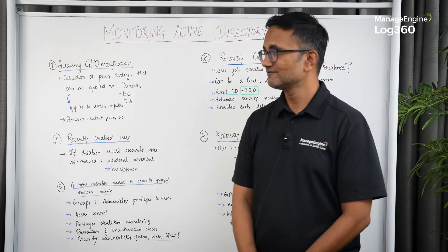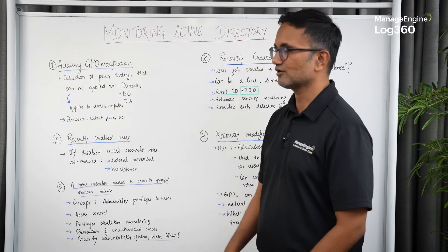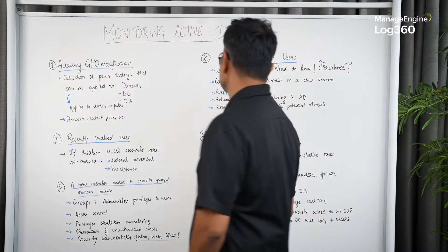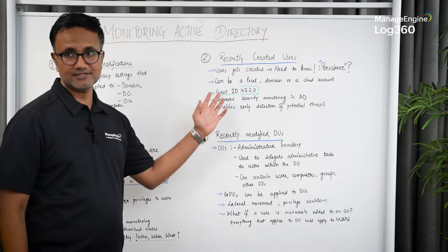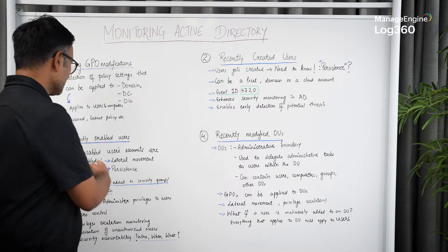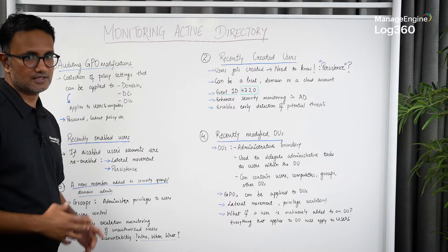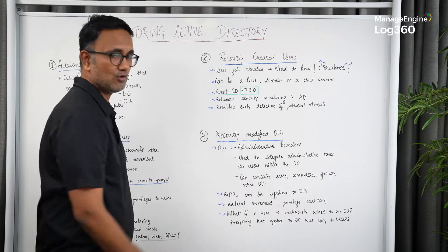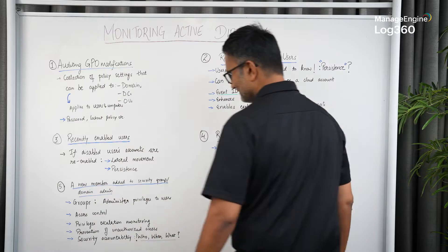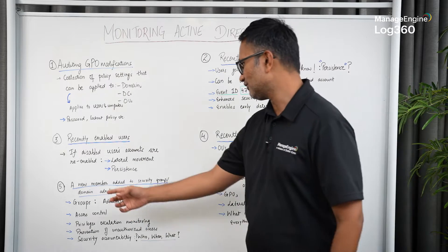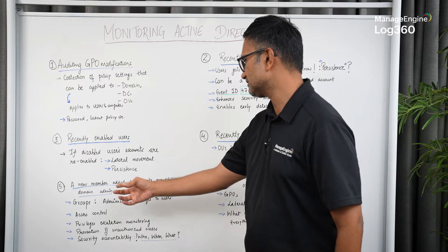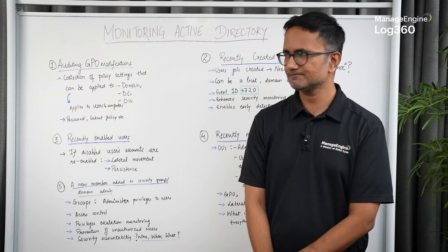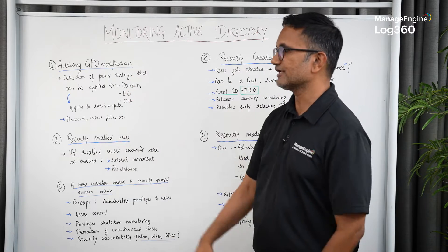First is auditing GPO modifications, or how you're going to audit your Group Policy Objects. The second thing is how you're going to monitor recently created users. The third is recently enabled users. The fourth is recently modified organizational units. And finally, we'll cover how you can monitor changes that happen to security groups such as domain administrators or other sensitive groups.